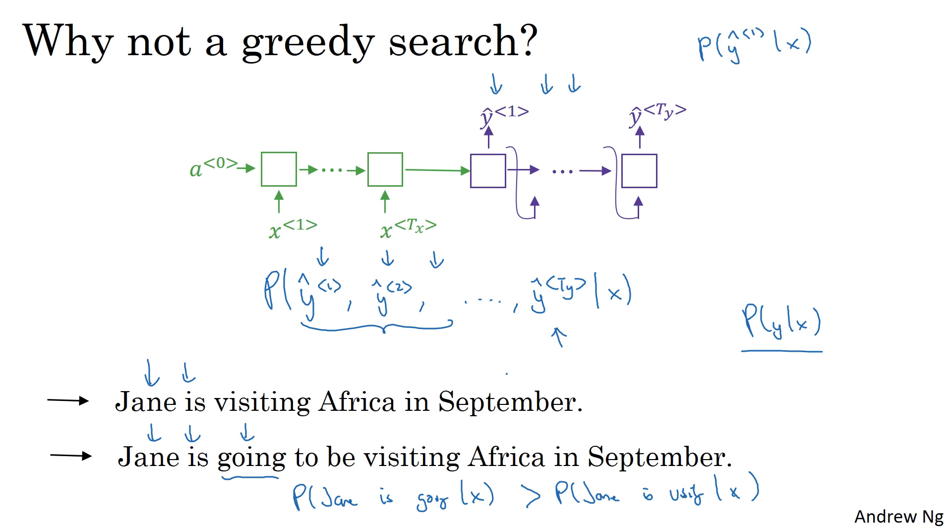the total number of combinations of words in an English sentence is exponentially large. So if you have just 10,000 words in a dictionary, and if you're contemplating translations that are up to 10 words long, then there are 10,000 to the 10 possible sentences that are 10 words long, picking words from the dictionary size of 10,000 words. So this is just a huge space of possible sentences, and it's impossible to enumerate them all, which is why the most common thing to do is to use an approximate search algorithm.